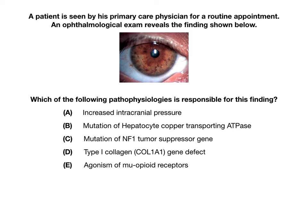What you need to pay attention to in this image is what the red arrow is pointing toward. What I'm showing you is what's referred to as Lisch nodules, and that points us to choice C. Lisch nodules are melanocytic — basically darkened iris hamartomas — and because of that, they are associated with neurofibromatosis type 1. The mutation of the NF1 tumor suppressor gene is the pathophysiology responsible for neurofibromatosis type 1, in which you get Lisch nodules, which are melanocytic iris hamartomas.